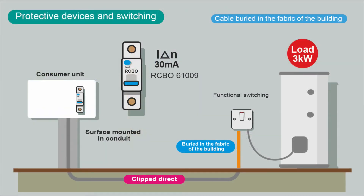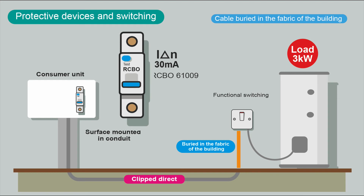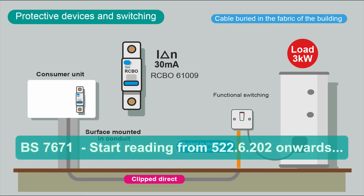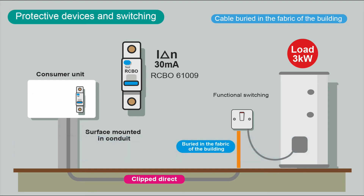The method of fault protection we're going to use is ADS — automatic disconnection of supply. For every circuit we also want to add additional protection via an RCD, in this case an RCBO, giving individual RCD protection to every circuit for good discrimination. A fault on one circuit has no impact on another. Because of the method of installation — cable buried in the fabric of the building — we have to add RCD protection anyway, so it's got to be a 30 milliamp RCD.